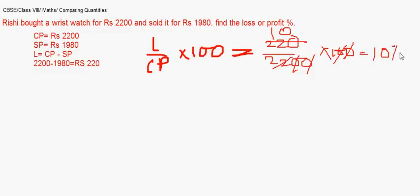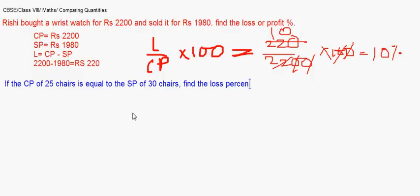This is one of the very direct questions on profit and loss. We now take up another question here. If the cost price of 25 chairs is equal to the selling price of 30 chairs, such questions are better done with taking the cost of one chair to be one rupee.